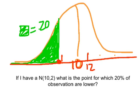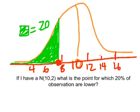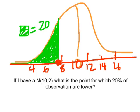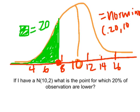The scale along the bottom could be eight, ten, twelve, fourteen, and so on. We want that specific point on the scale for which twenty percent of observations fall below. This is a norm inverse question. We use: =NORM.INV(0.20, 10, 2). It returns the point on the scale — as opposed to norm dist, which returns a probability. If we're just trying to find a point, we use norm inverse.